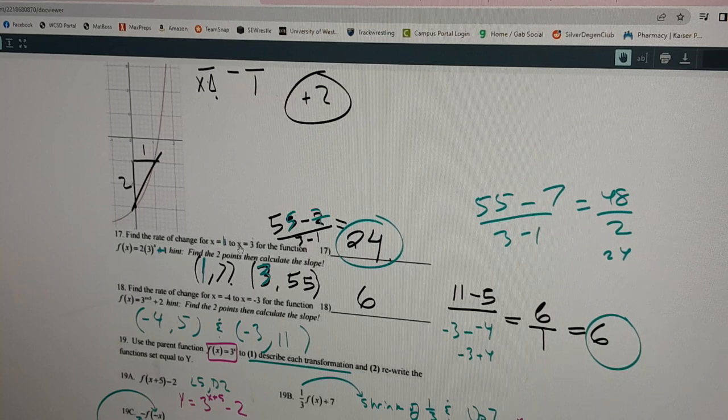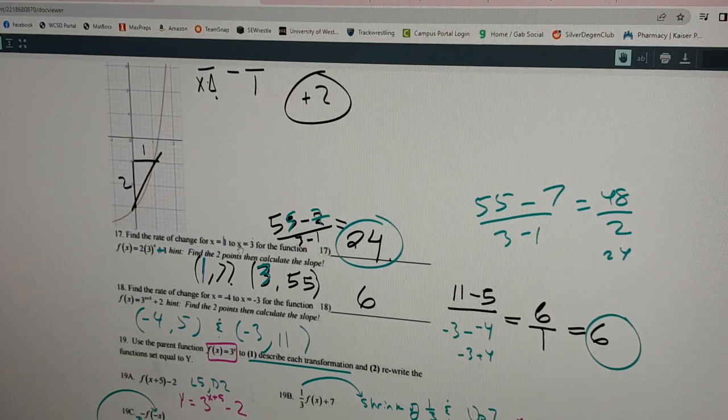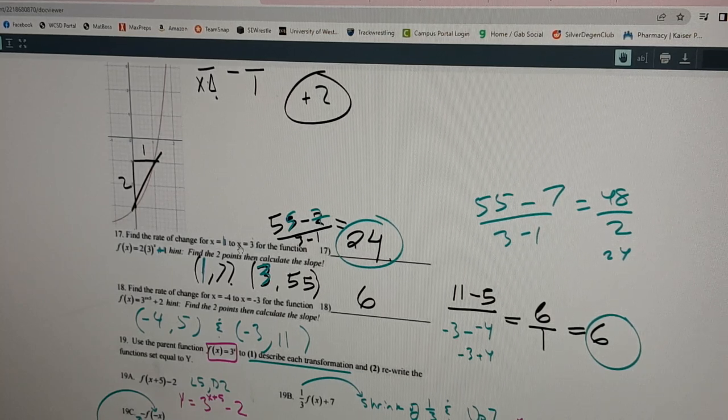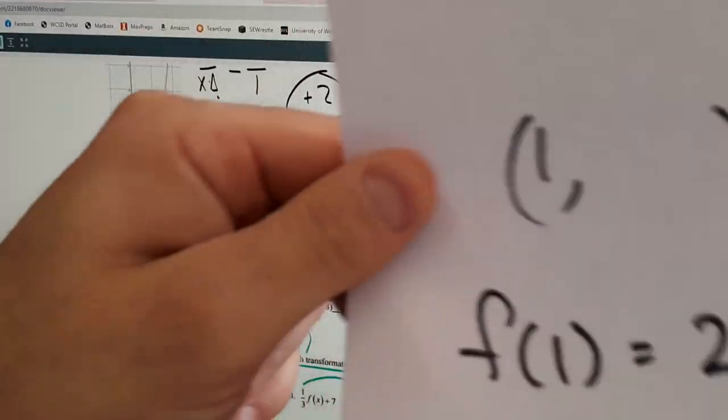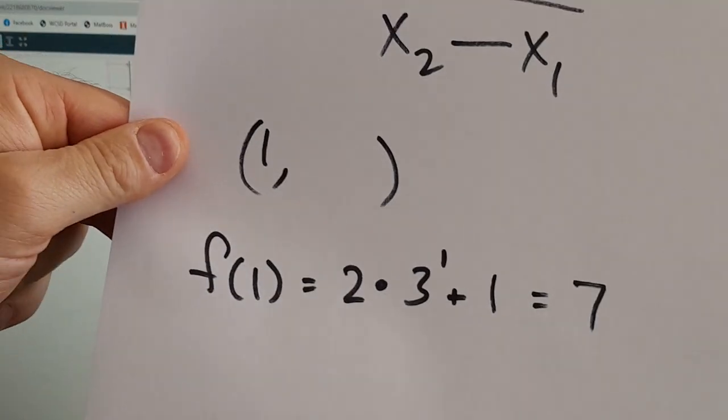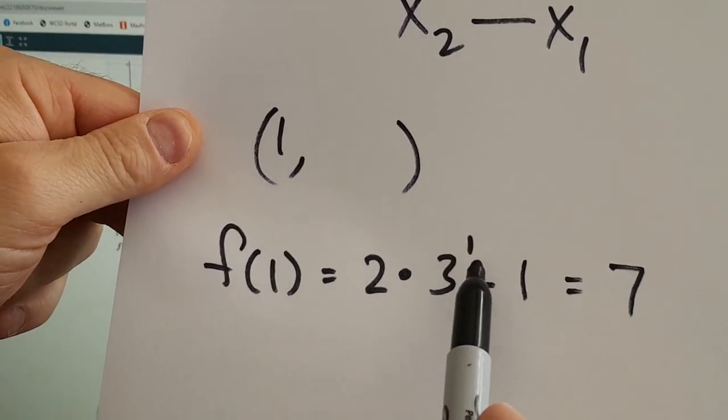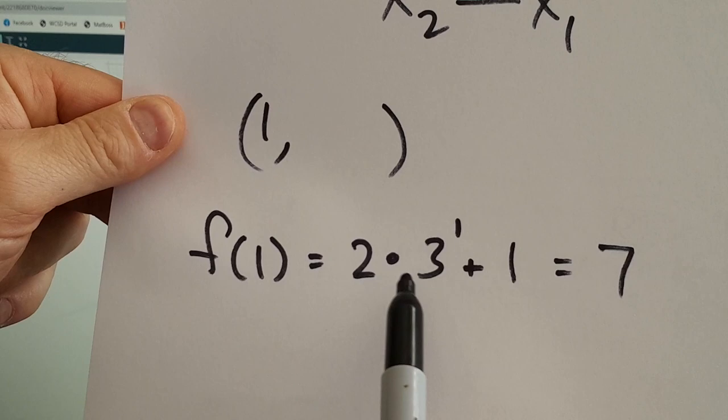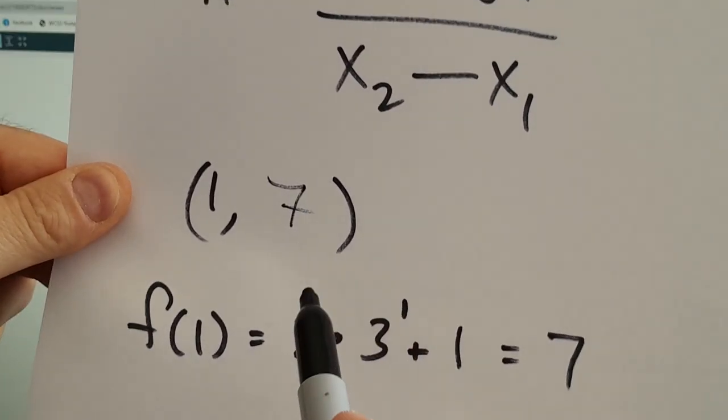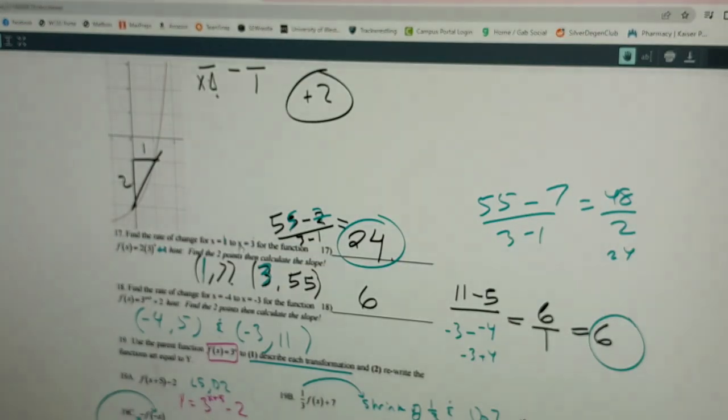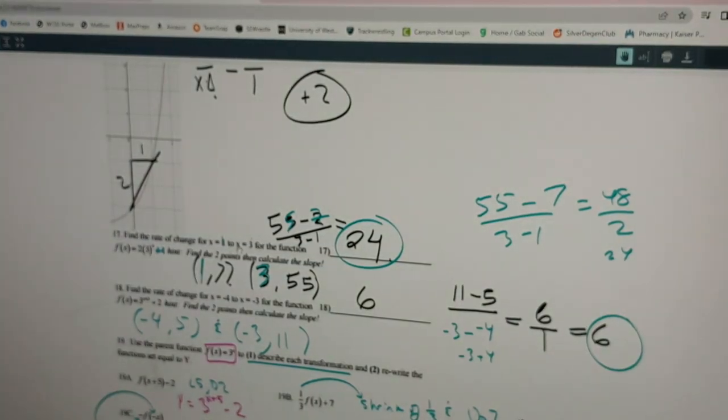So I've got to find the other value. I'm going to say f of 1 equals 2 times 3 to the 1 plus 1. If you plug it into the equation, if you plug in the 1 right there, you get 2 times 3, which is 6, plus 1 is 7. So the other point has a 7. Okay, and now we'll find the other one, the other one is 3.